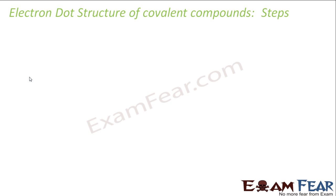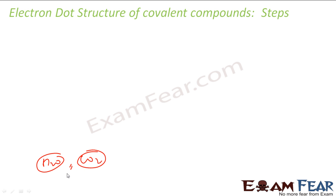I wrote the electron dot structure of the water molecule H₂O right in front of you, and also for CO₂. We generally write these for other molecules too, but there should be a rule to write them correctly — especially if you are given any other covalent compound. So let's learn the steps to write the electron dot structure, also called Lewis structure.